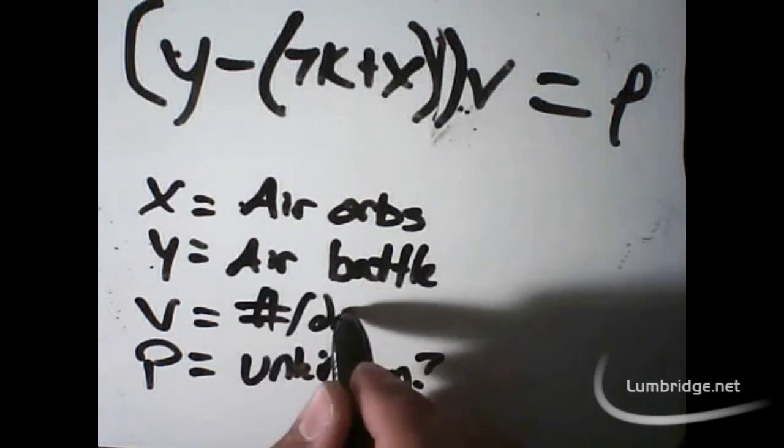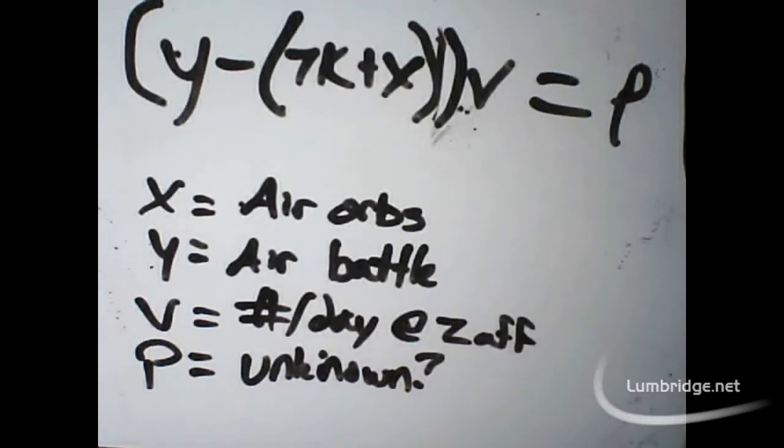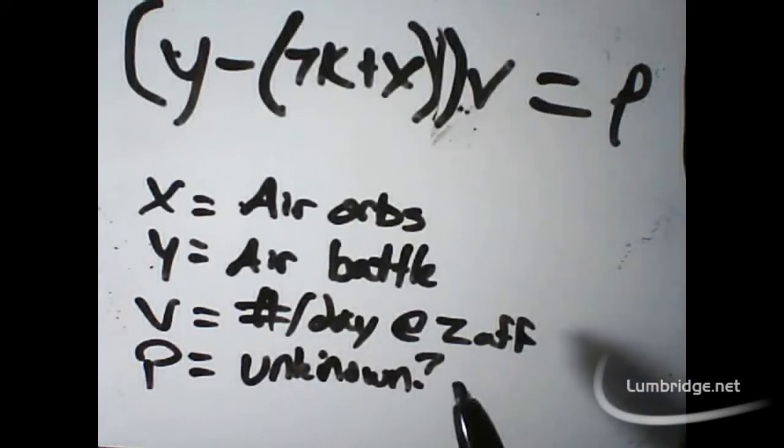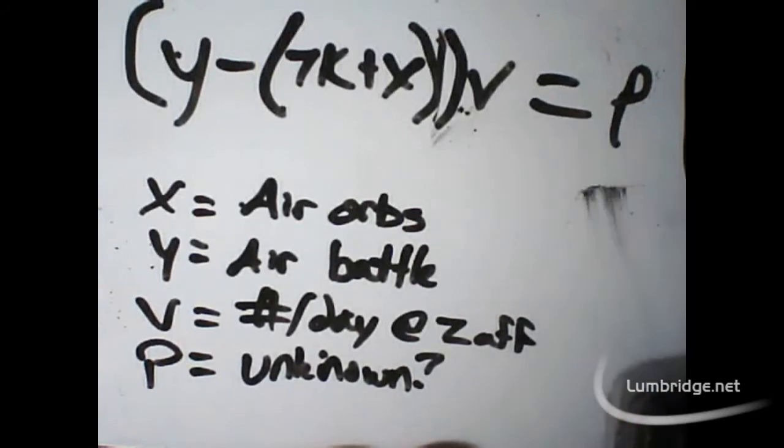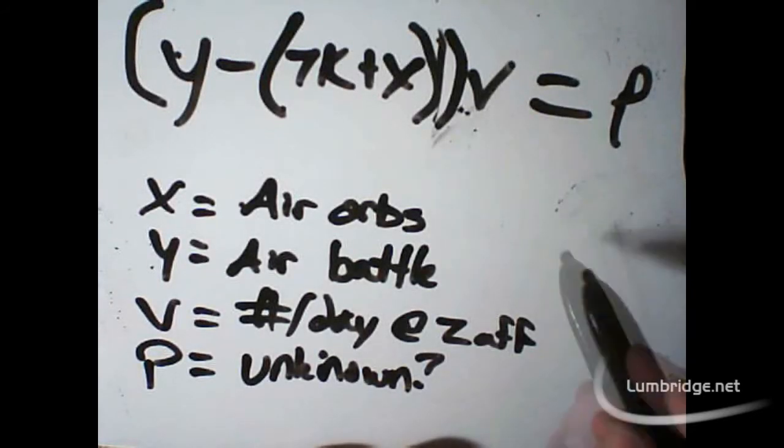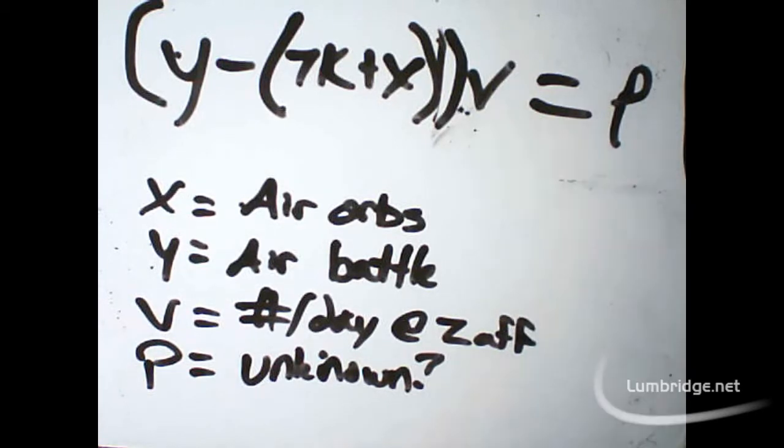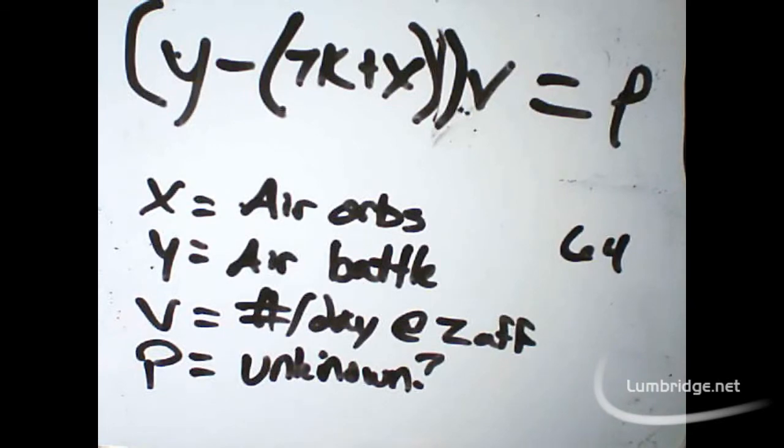It's the number of battle staffs per day that you can buy from Zaf in Varrock. This is based depending on if you have Varrock armor. If you have no Varrock armor, you can get 8 per day. If you have level 1 Varrock armor, you can get 16. If you have level 2 Varrock armor, you can get 32. And finally, if you have level 3 armor, you can get 64 each day for 7,000 gold.